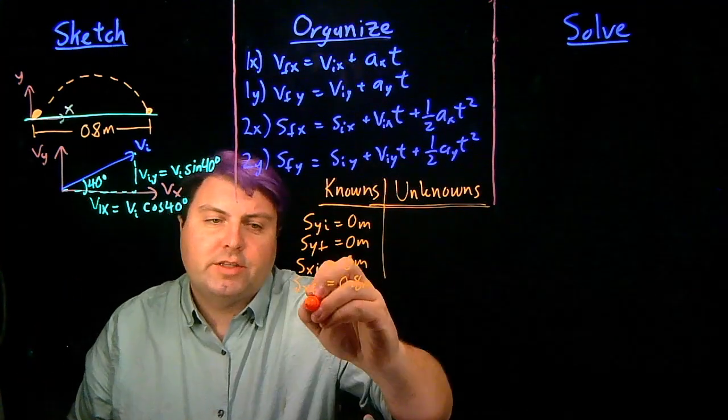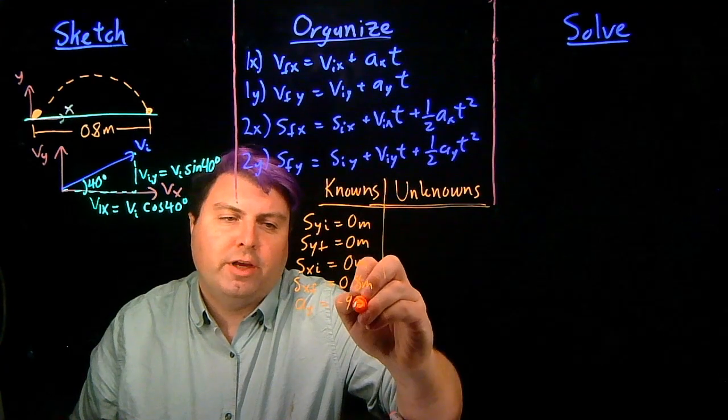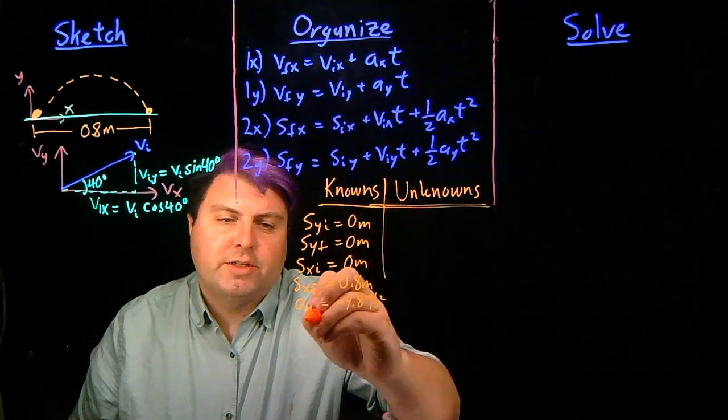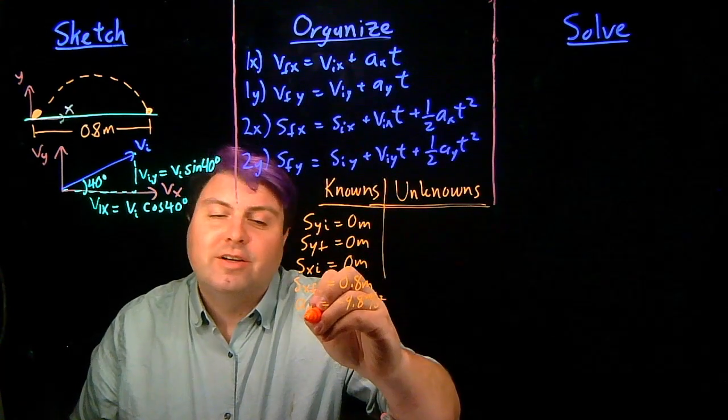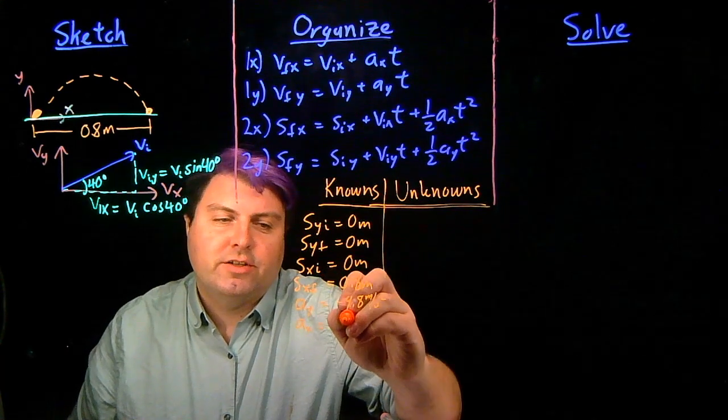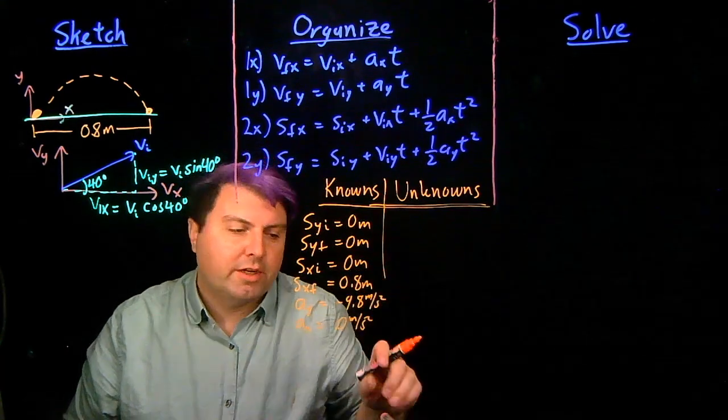We know the acceleration in the y direction is negative 9.8 meters per second squared, and we also know that the acceleration in the x direction is going to be zero meters per second squared.